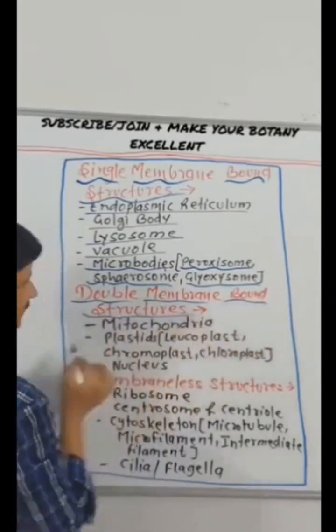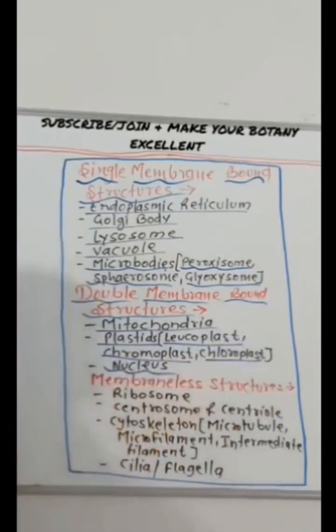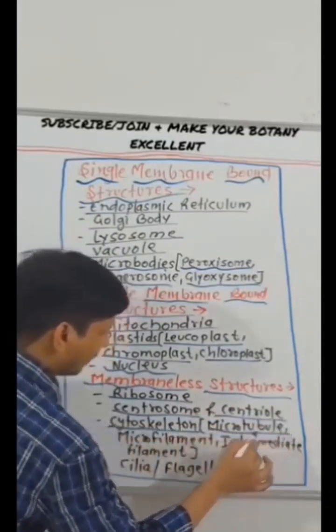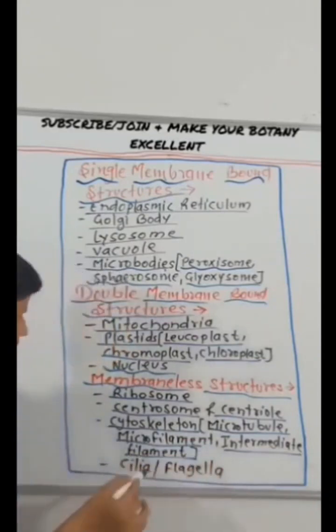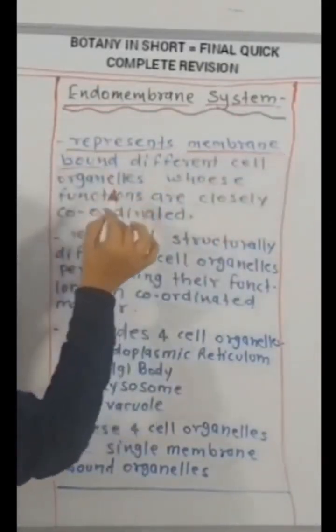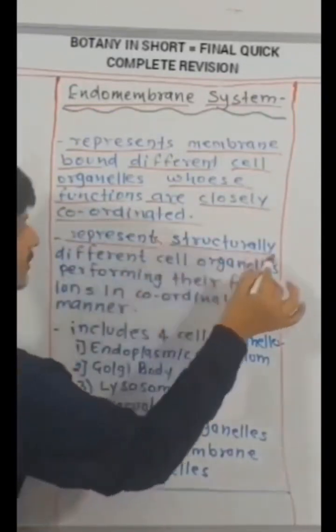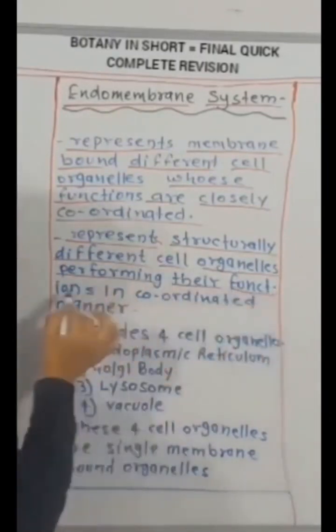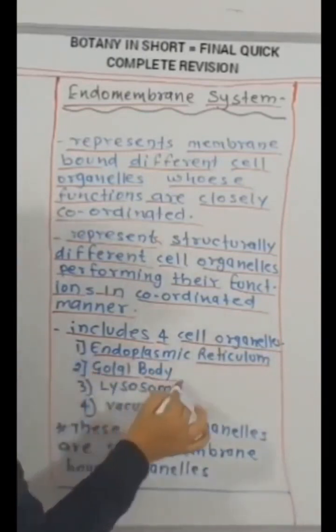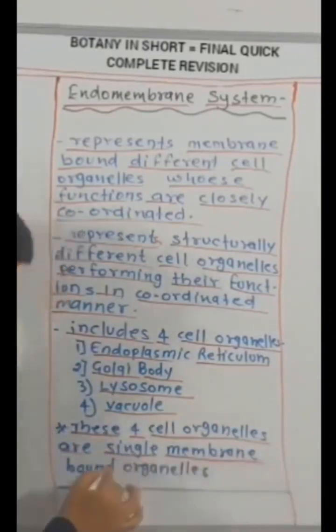Double membrane bound structures: mitochondria, plastids on the name of leucoplast, chromoplast, chloroplast. Nucleus. Membraneless structures: ribosome, centrosome and centriole, cytoskeleton on the name of microtubule, microfilament, intermediate filament, and cilia or flagella. Endomembrane system represents membrane bound different cell organelles whose functions are closely coordinated. Represents structurally different cell organelles performing their functions in coordinated manner. Includes four cell organelles: endoplasmic reticulum, Golgi body, lysosome, vacuole. These four cell organelles are single membrane bound organelles.